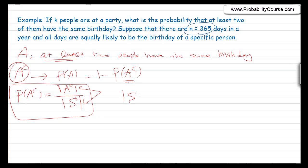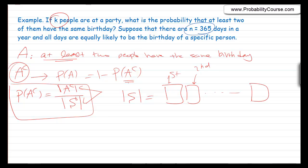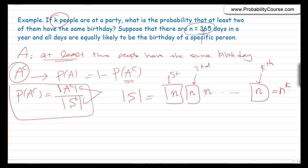What is the sample space S? It's all possibilities for birthdays of k people. The first person has n = 365 options, the second person can also have any birthday so again n, and the next person also n, and so on. So the total number of possible birthday assignments is n to the power of k. This is the size of the entire sample space.